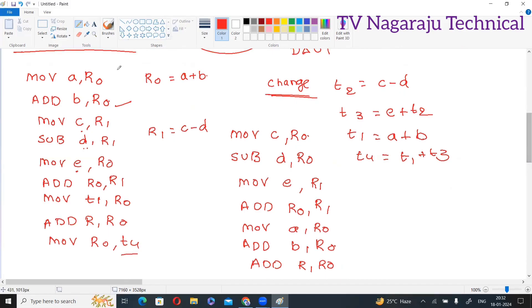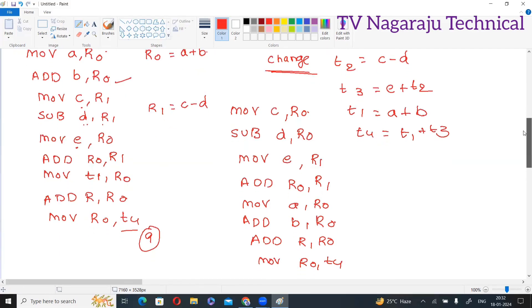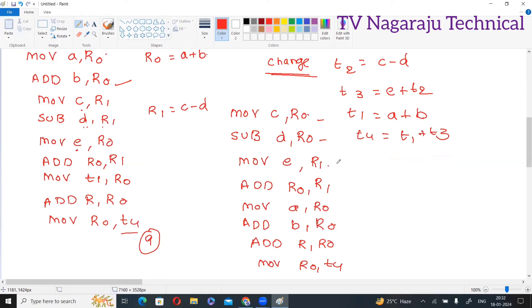Here observe the number of instructions: 1, 2, 3, 4, 5, 6, 7, 8, 9. We have total 9 instructions. Here observe: 1, 2, 3, 4, 5, 6, 7, 8. We have total 8 instructions. Simply by changing the order, the number of instructions is reduced.